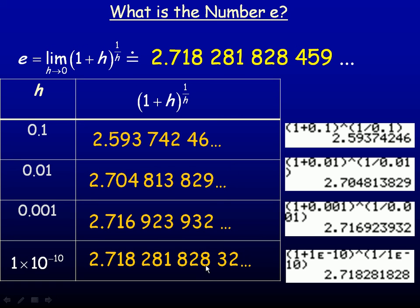Notice that our computed value is accurate to the 9th decimal place. So that's what the number e is — it's the base of the natural logarithm. When someone writes ln, it means a logarithm with that base. And that's the end of the lesson.